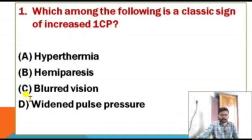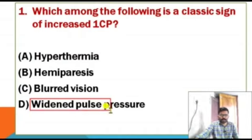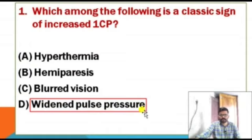The correct answer is widened pulse pressure. Widened pulse pressure is the difference between the systolic and the diastolic blood pressure. That is the pulse pressure — the difference between systolic and diastolic blood pressure is the widened pulse pressure.